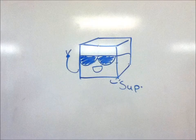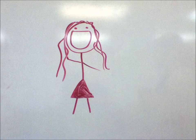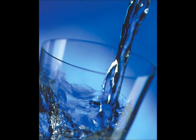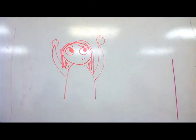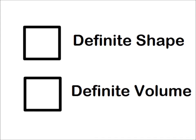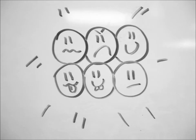Say hi Ice Cube! Sup! Thanks Ice Cube! The three basic forms of matter are solids, liquids, and gases. Solids have a definite shape and a definite volume. Their atoms — or the smallest unit of an element — are tightly packed together.